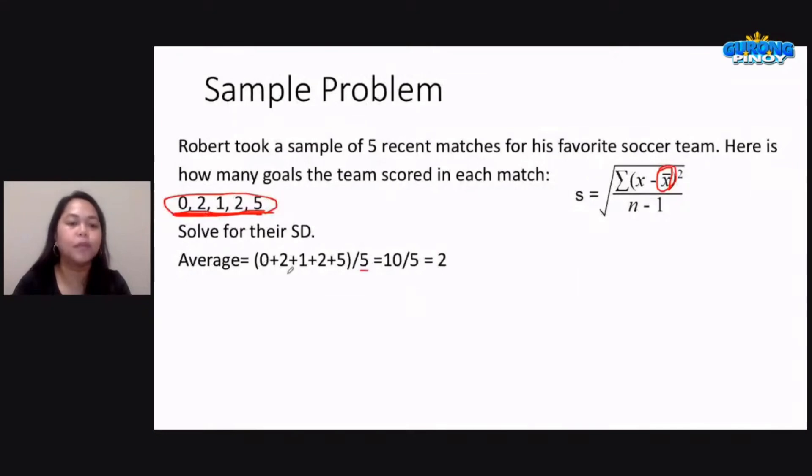So we have 0 plus 2 plus 1 plus 2 plus 5, all over 5. 5 dahil meron tayong limang items dito or limang scores dito. So 2 plus 1 plus 2 plus 5, that's 10, over 5. That means our mean, our average would be 2.